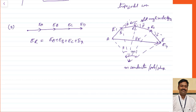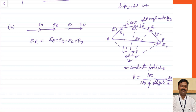The total angle will be number of conductors multiplied by slot angle, where beta equals 180 degrees divided by number of slots per pole — that is in electrical degrees. If the total number of slots per pole is equal to n, then beta becomes 180 divided by n. The value of m·beta is called as the phase spread angle, and generally this is represented by sigma.